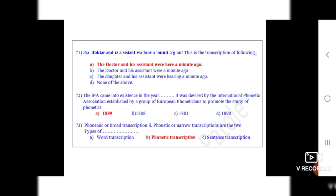Question 72: The IPA came into existence in the year dot. It was devised by the International Phonetic Association established by a group of European phoneticians to promote the study of phonetics. The correct option is A, 1889.